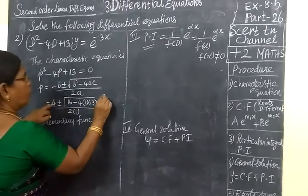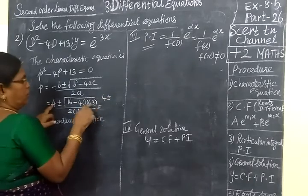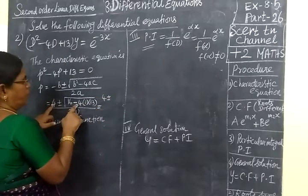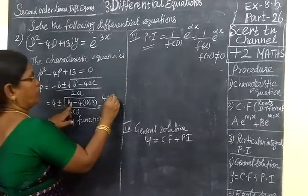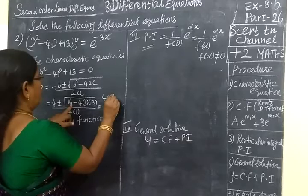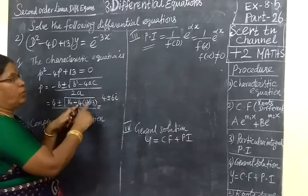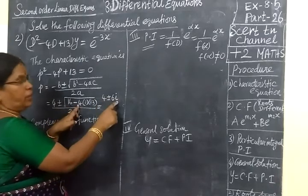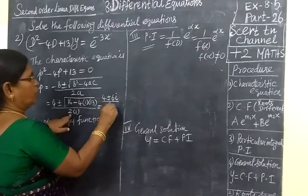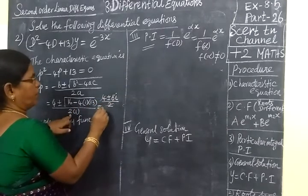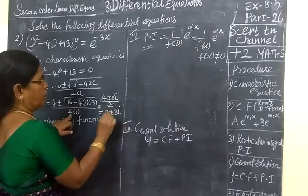This is equal to 4 plus or minus root of, here 13 into 4, minus 16 minus 52 is minus 36. Root of minus 36. Root of 36 is 6. Root of minus 1 is i. Denominator is 2. Common 2 cancel, we are getting 2 plus or minus 3i.